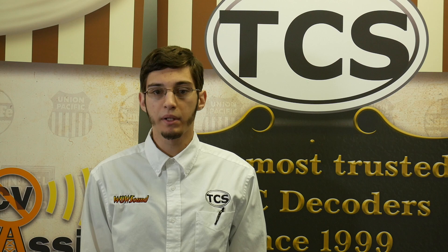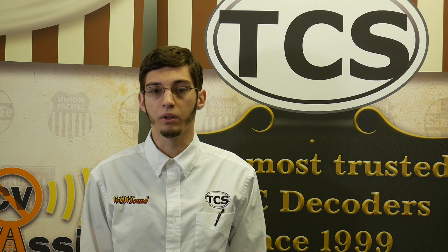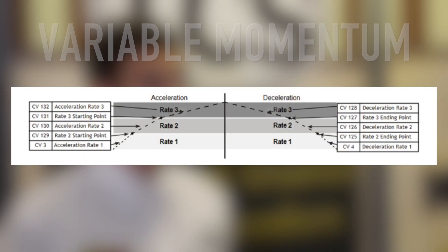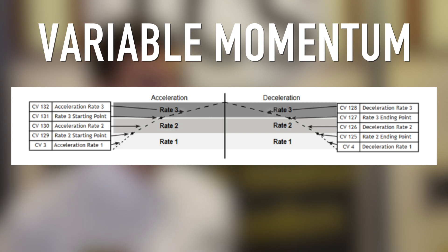For users looking to get an even more finely tuned momentum curve, an additional advanced feature is available in TCS decoders called variable momentum. As you can see from this diagram, variable momentum has five CVs for both acceleration and deceleration, which sets up to three momentum rates for each. Each of the six rates may be individually tweaked as well as the four breakpoints. Implementing variable momentum is as simple as programming a value between 1 and 255 into all of the CVs outlined here.